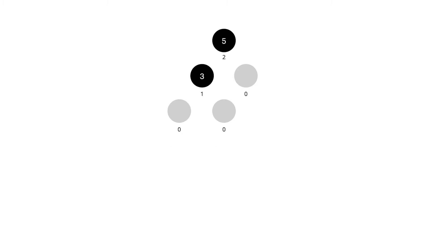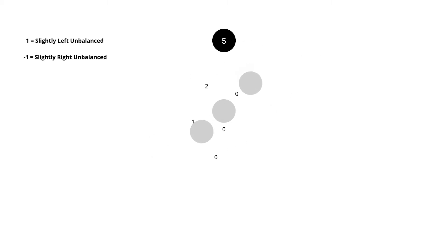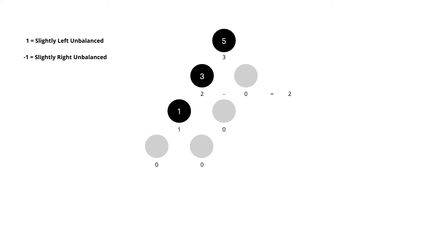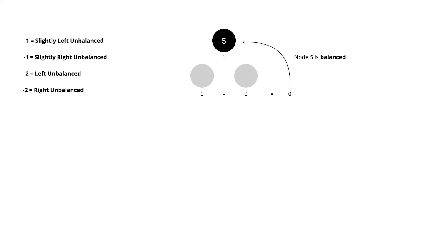Another thing you need to understand first is the balance factor, which tells us how unbalanced or balanced a node is. We get this by subtracting the left node height from the right node height. If left node height is one and right node height is zero, one minus zero equals one — meaning that node's left side is slightly unbalanced. The inverse, zero minus one, gives negative one, so the right side is slightly unbalanced. If left node height is two and right node height is zero, we get two, meaning the node is unbalanced on the left. Negative two means the node is unbalanced on the right. If the node is balanced, we get zero. The balance factor values we care about are negative two, negative one, zero, one, and two.